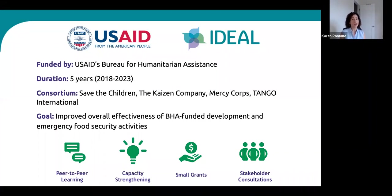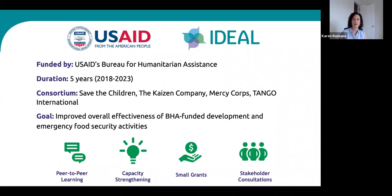That's my very quick overview of Ideal. To learn more, I invite you to explore the FSN Network link being pasted into the chat box right now. With that short introduction, I'll hand over to Austin to tell you more about our Small Grants Program and this Applied Research Award RFA.